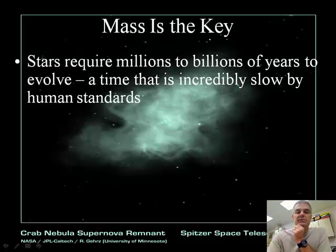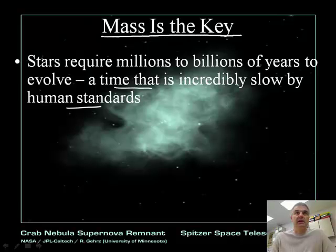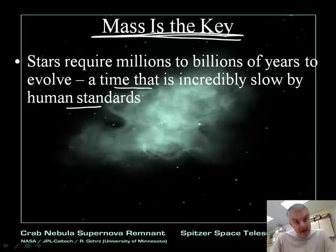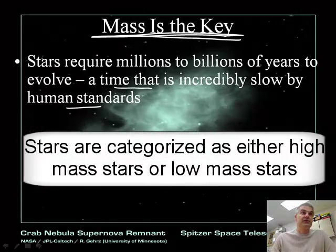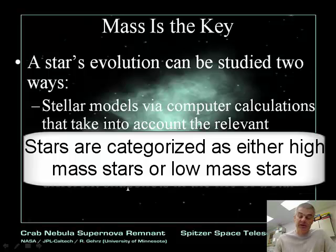Stars require millions to billions of years to evolve — a timescale incredibly slow by human standards. The key is mass. To understand stars, we must understand the concept of mass. Scientists have divided stars into two categories: high mass versus low mass stars, based not on physical size but on the amount of mass they contain.